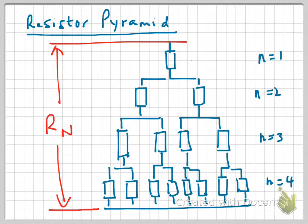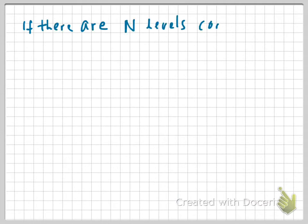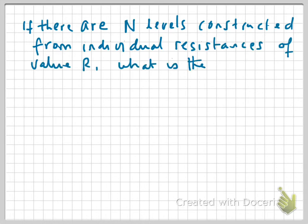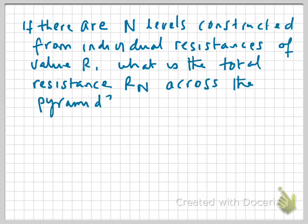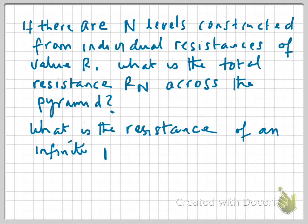So to put that into words, if there are n levels constructed from individual resistances of value R, what is the total resistance across the pyramid? Also, what is the resistance of an infinite pyramid of this type?